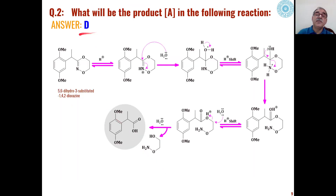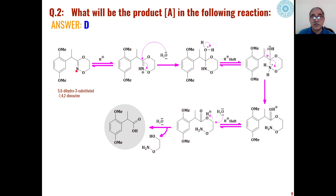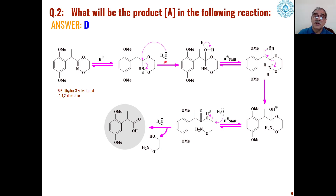In the second problem, the answer is D. When 5,6-dihydro-3-substituted-1,4,2-dioxazines are reacted under acidic conditions, this nitrogen will take up a proton and acquire a positive charge. Because of this, the pi electrons are attracted towards nitrogen, and this carbon becomes electrophilic. Water acts as a nucleophile and attacks this carbon. We then have this type of intermediate, which can lose a proton, and the H is shifted from here to this nitrogen to acquire the positive charge, since positive charge on oxygen is not stable.